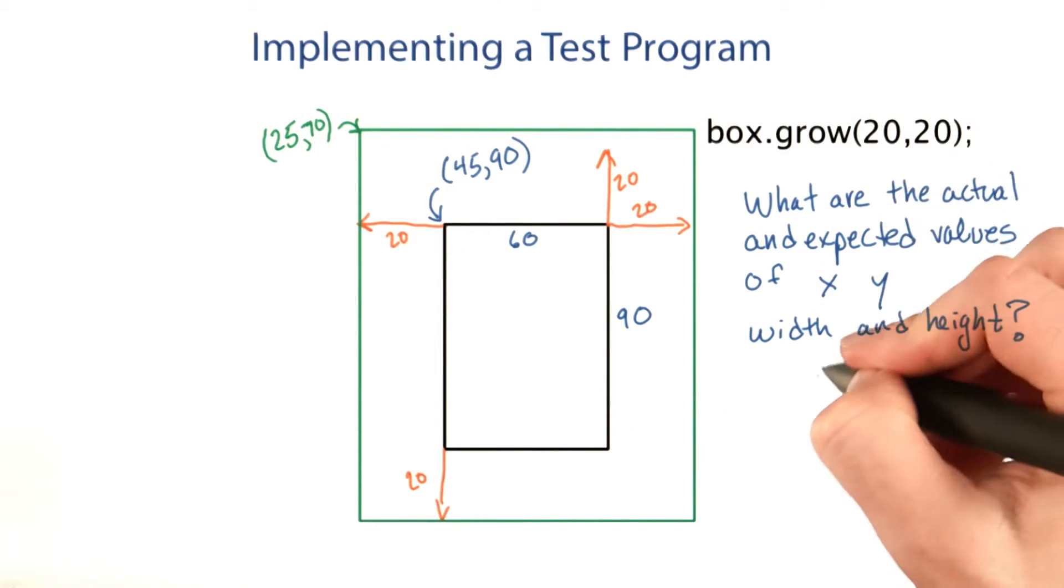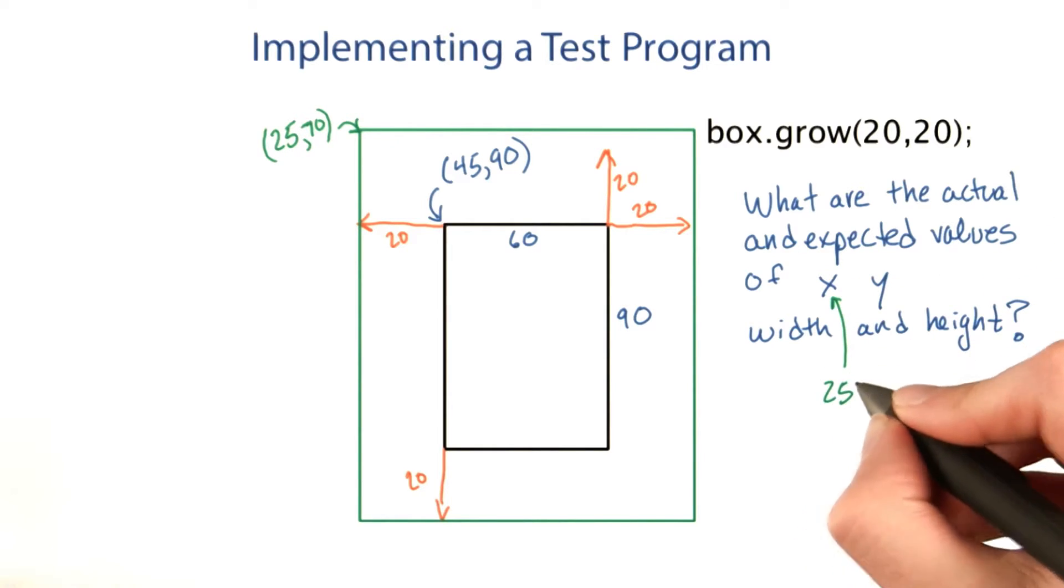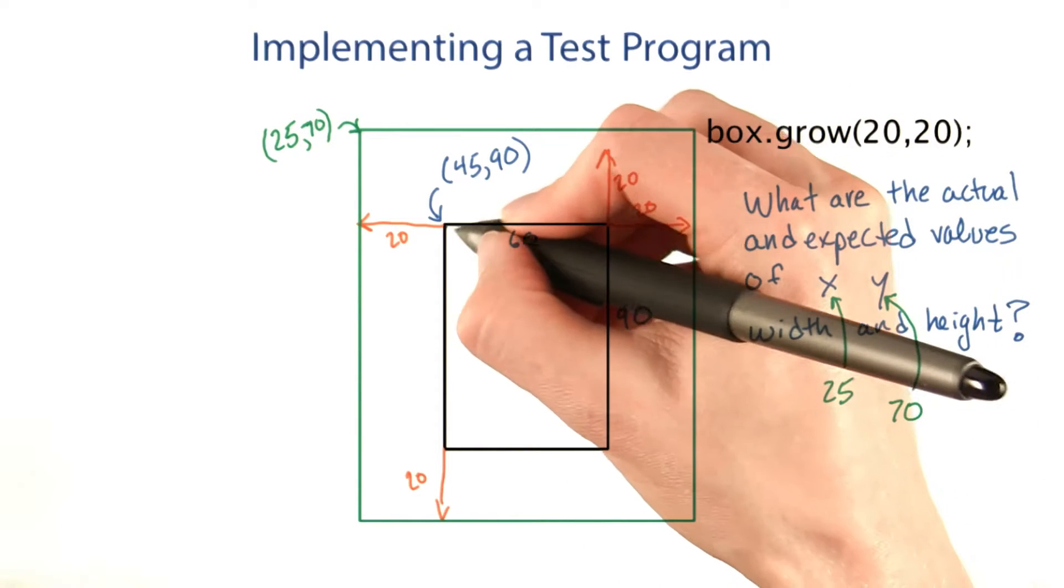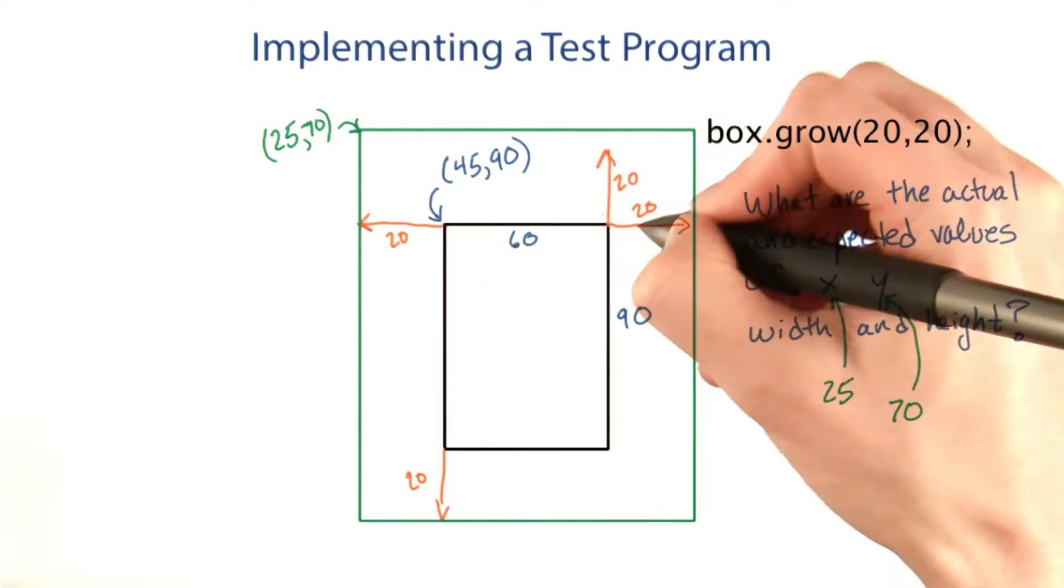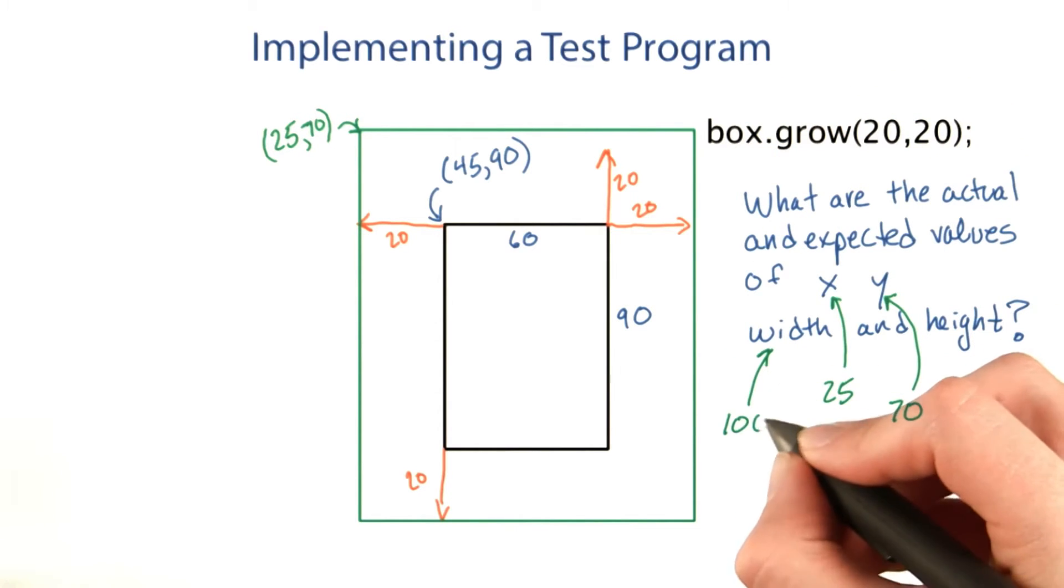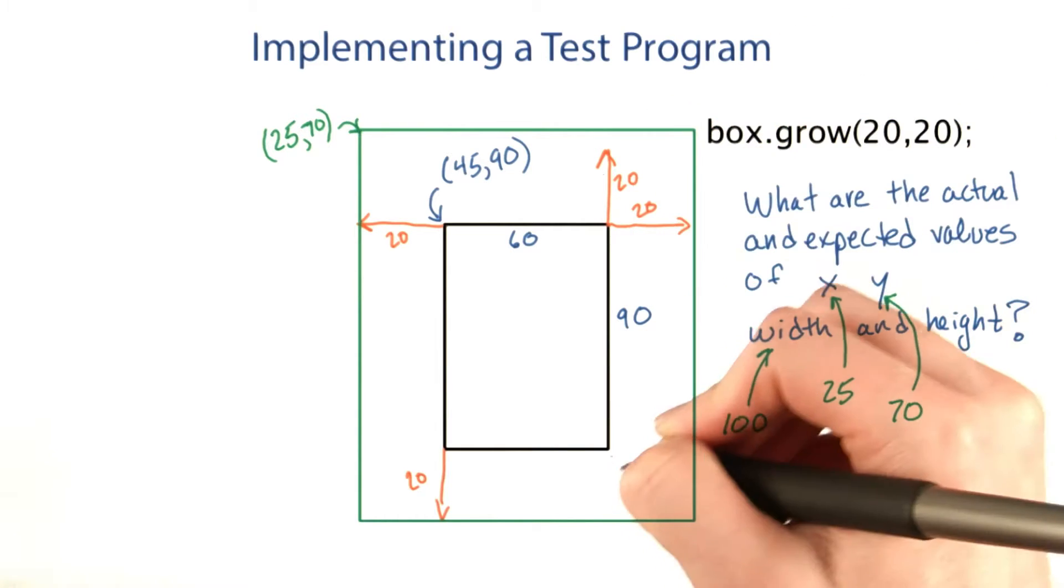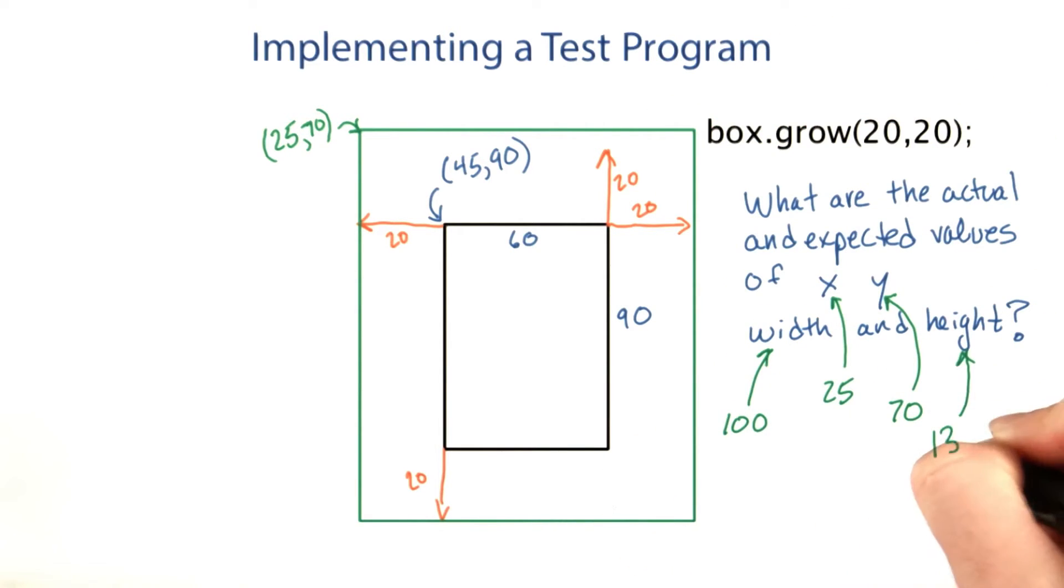So our expected value of x would be 25. And our expected value of y would be 70. The width would be 60 plus 20 on one side and 20 on the other side, so 100. And the height would be 90 plus 20 at the top and 20 at the bottom, so 130.